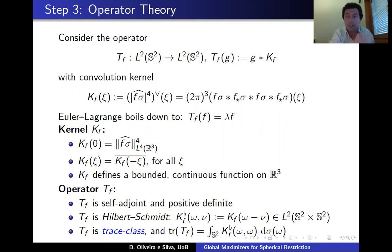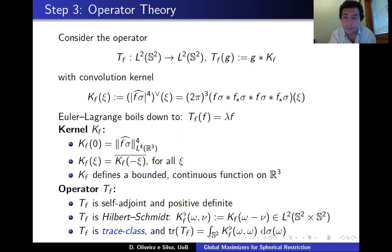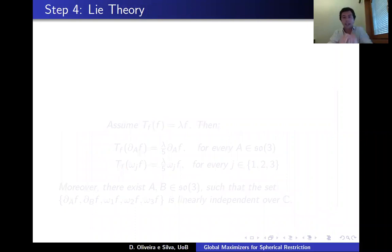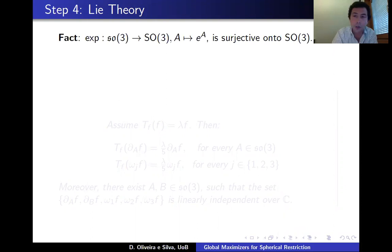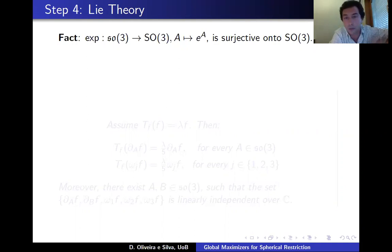The takeaway is that given f in L^2 we can construct a trace-class, self-adjoint, positive-definite operator T_f whose eigenvalue problem is equivalent to the Euler-Lagrange equation. Now it is time to discuss the symmetries of the problem. The group of symmetries of the sphere is the orthogonal group; focusing on SO(3), the exponential map from the Lie algebra to the Lie group is surjective, meaning every rotation has an infinitesimal generator.